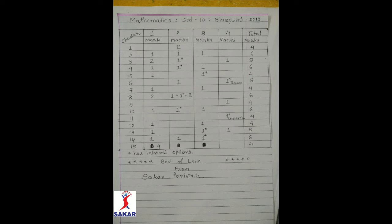Chapter 3 also has 1 question of 4 marks, total 8 marks. In Chapter 4: 1 question of 1 mark, 1 question with internal option of 2 marks, 1 question of 3 marks, total 6 marks. Chapter 5: 1 question of 1 mark, 1 question with internal option of 3 marks, total 4 marks. Chapter 6: 1 question of 2 marks, 1 question with internal option of 4 marks — this question is a theorem — total 6 marks.